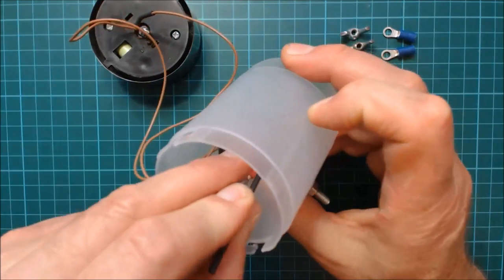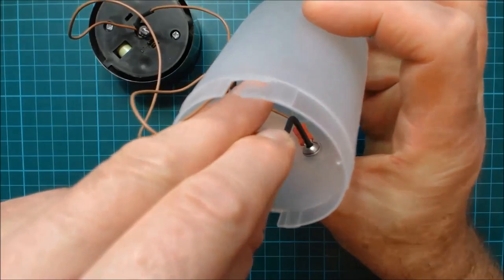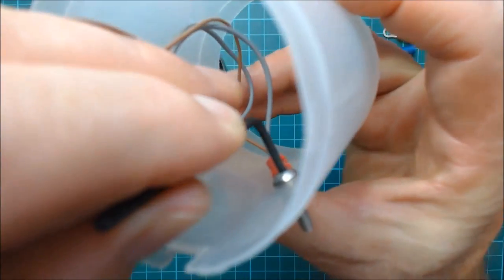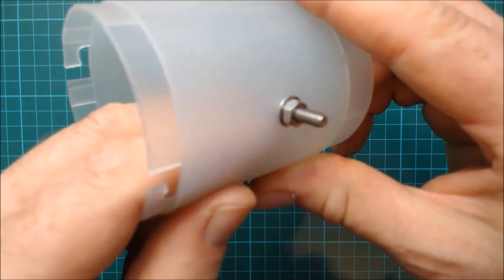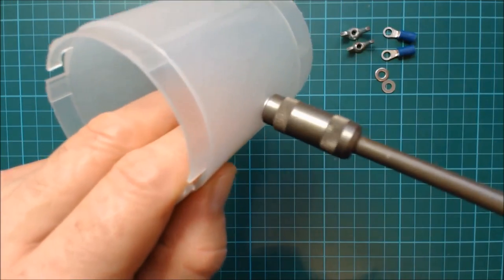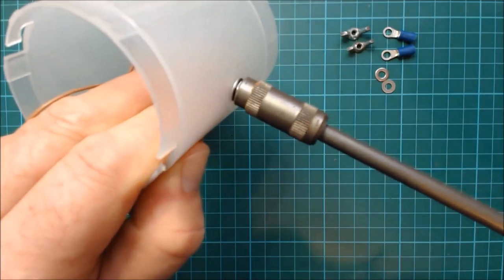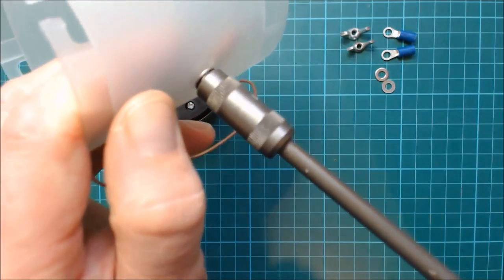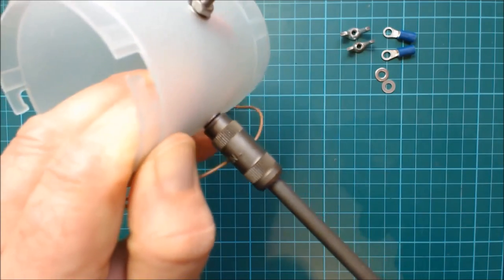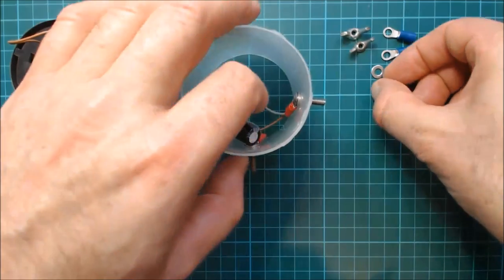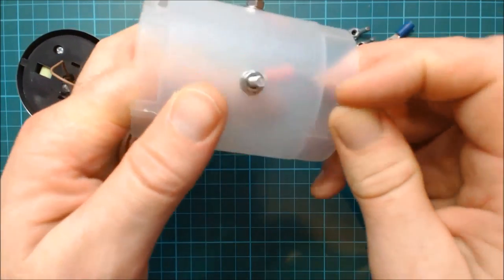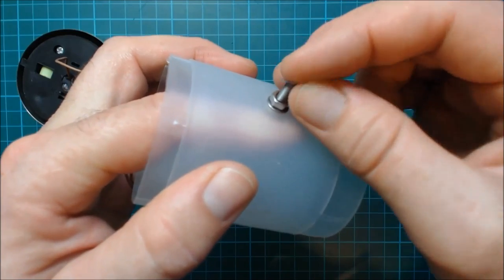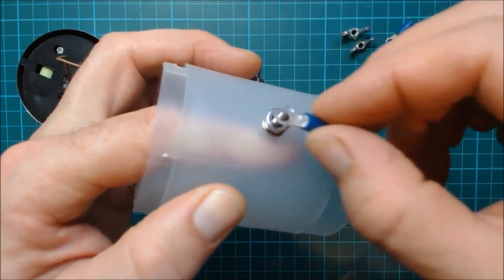The reason for using the button head screws becomes more obvious now as the hex key makes it much easier to tighten them. So now I'm going to add some additional washers and nuts and also some ring terminals to connect to the wire fence.